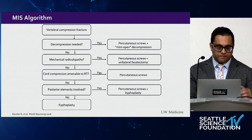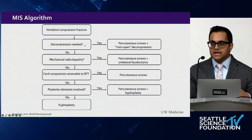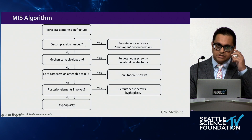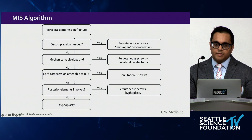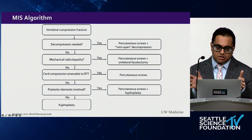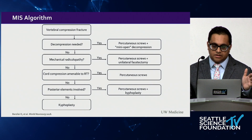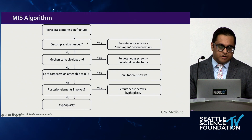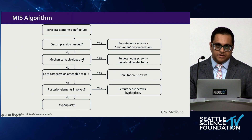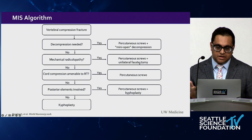When a patient presents with a compression fracture, the first question is whether a decompression is needed. If it's a thoracic spine with high-grade cord compression centrally, I perform percutaneous screws followed by a mini-open using an expandable retractor such as an XLIF retractor—a small incision but wide tissue exposure for central decompression. If central decompression is not required but the patient is in the lumbar spine with mechanical radiculopathy from unilateral pedicle involvement or nerve root compression, I do percutaneous screws followed by unilateral hemilaminectomy or facetectomy using a tubular retractor.